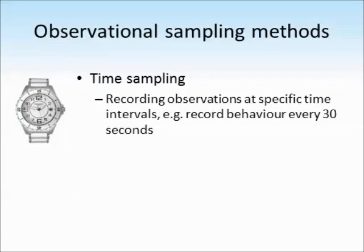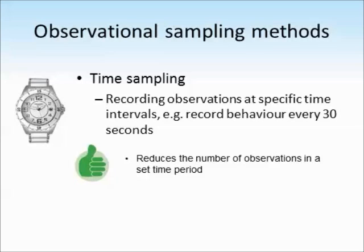The other type of sampling method is called time sampling. This is where we only record observations at specific time intervals. So we might make an observation every 30 seconds and only record what the child is doing at that 30-second point. This is quite helpful in reducing the number of observations in a set time period and gives us less data to work with.